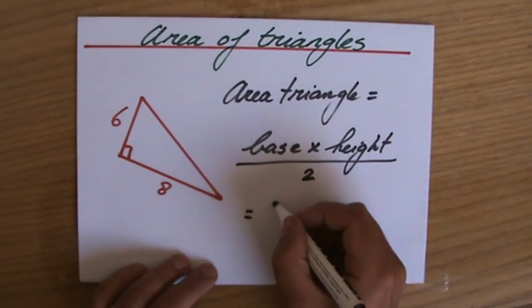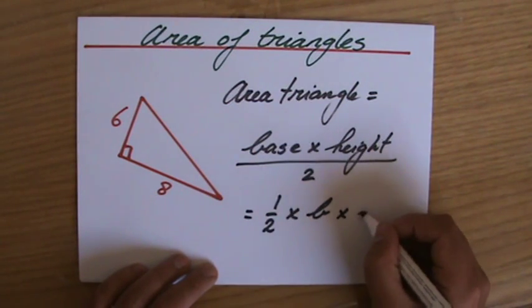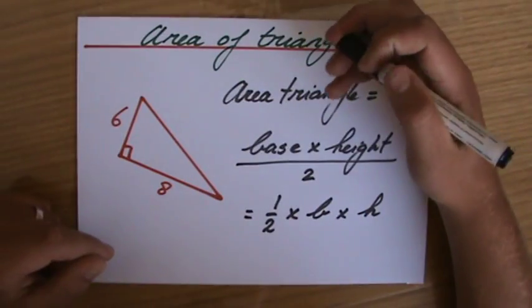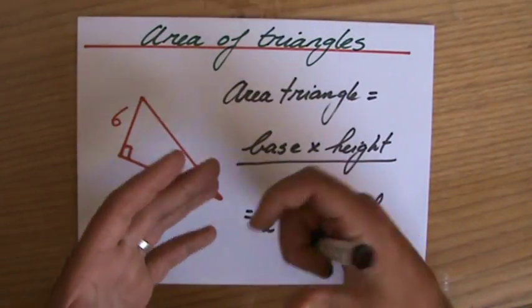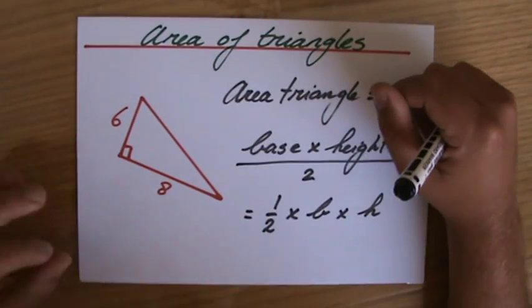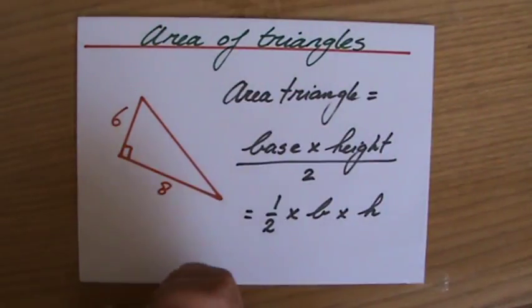Now, important: to say alongside with this formula, always mentally to yourself, half times base times height, where the base and the height make an angle of 90 degrees.